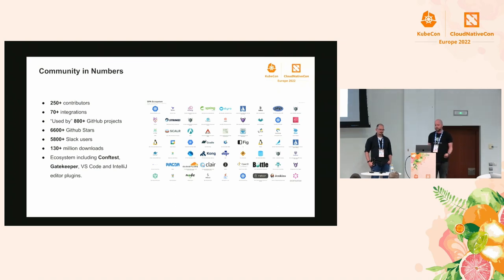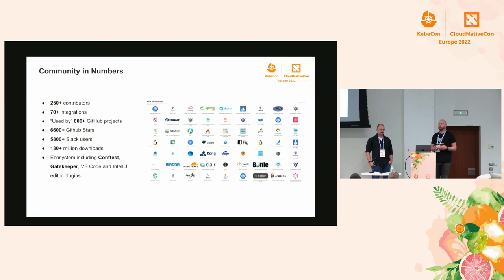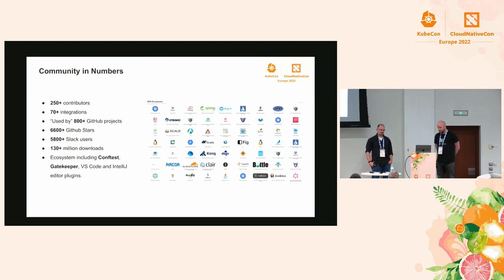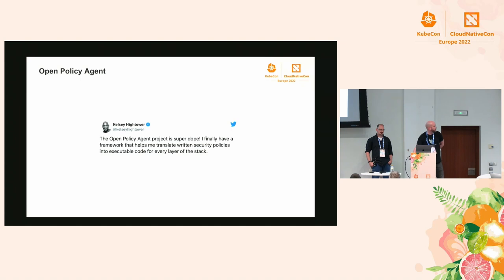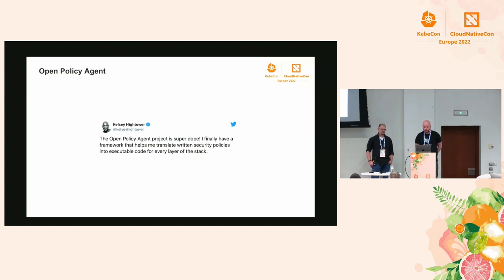The ecosystem is much more than just OPA core. One tool is ConfTest, which lets you write policy and run it on local files - commonly used for CI/CD pipelines. There's also OPA Gatekeeper, which we'll talk about later, and editor integrations for VS Code and IntelliJ. To summarize what OPA is really about: 'The Open Policy Agent project is super dope. I finally have a framework that helps me translate written security policies into executable code for every layer of the stack.'